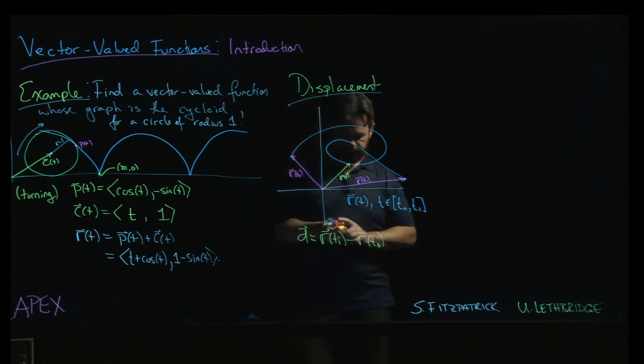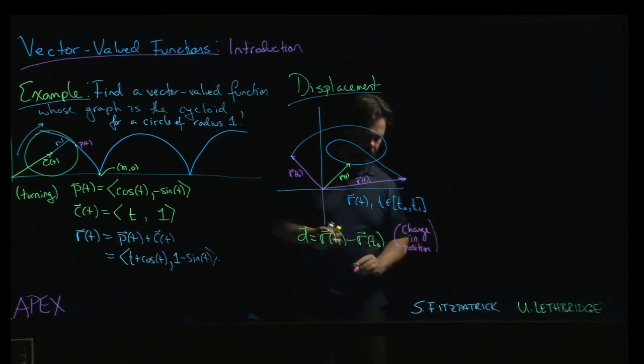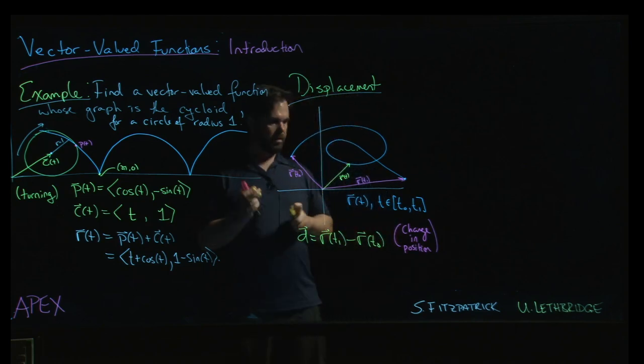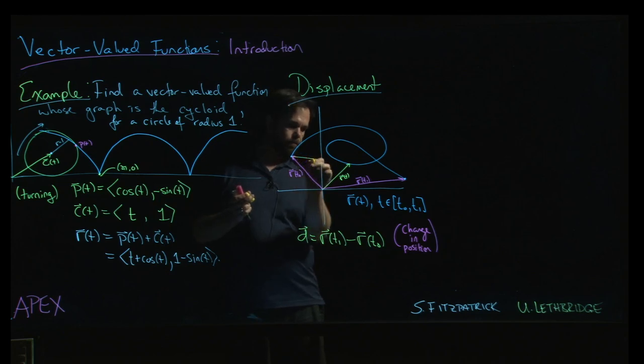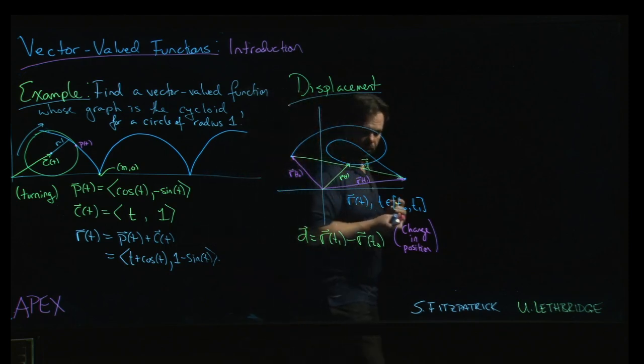And so what it really is, is it's a change. If we think of this as a position function, it's a change in position. Final position minus the initial position gives the change. And so the change is here. That's the displacement vector, d, going from the initial point to the final point.